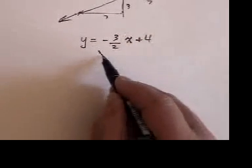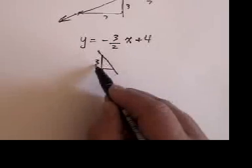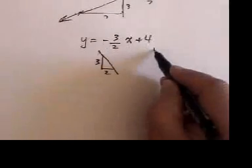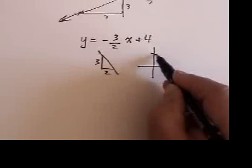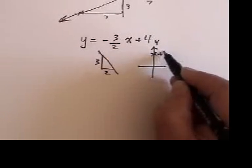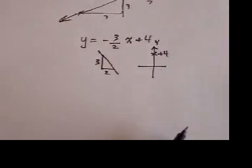Here is my first picture. I draw a negative line and I put a 3 over a 2. Here is my second picture. I draw an xy axis and on the y axis, at positive 4, I put my starting point.